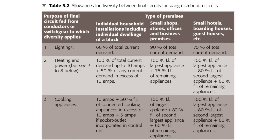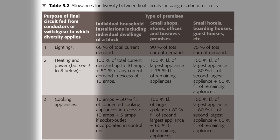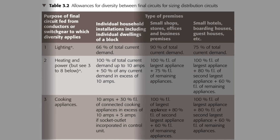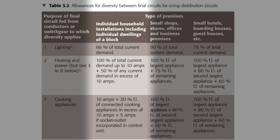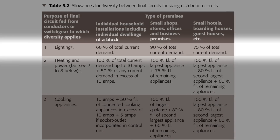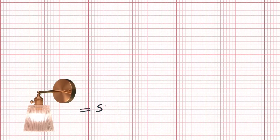The Design Guide also notes that the use of other methods of estimating maximum demand is not precluded where specified by a competent electrical design engineer. The table is split into four columns: the first is circuit type, and the second, third, and fourth are different types of premises. We're going to look at the first column as it relates to individual household installations. The first row is lighting, and tells us to take 66% of the total current demand.